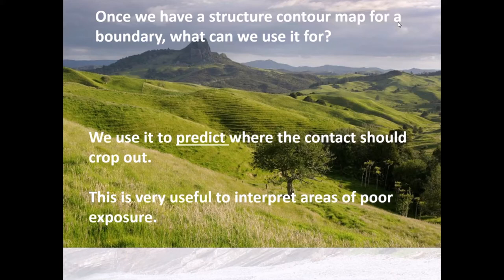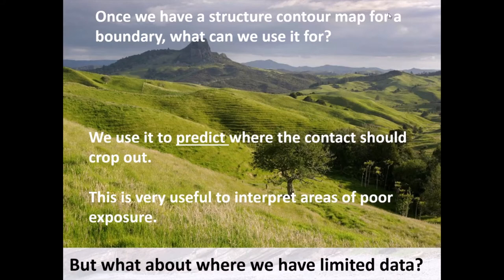These structural contour maps are really useful because if we have a structural contour map for a boundary, we can use it to predict where a contact would crop out. We could even use it to build a geological map for areas where we have limited exposure — like where the rocks would be beneath vegetation, which we can't map through. However, these maps work because we've had at least two locations where we could draw a structural contour line through.